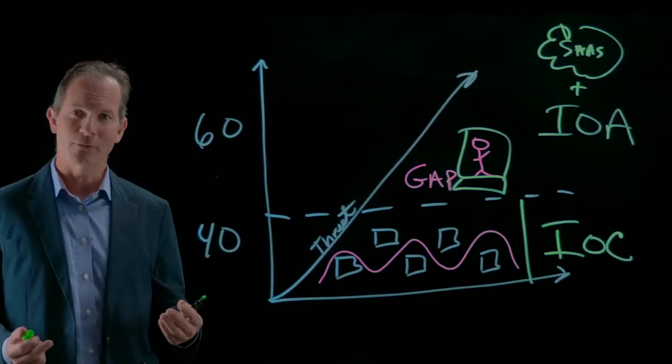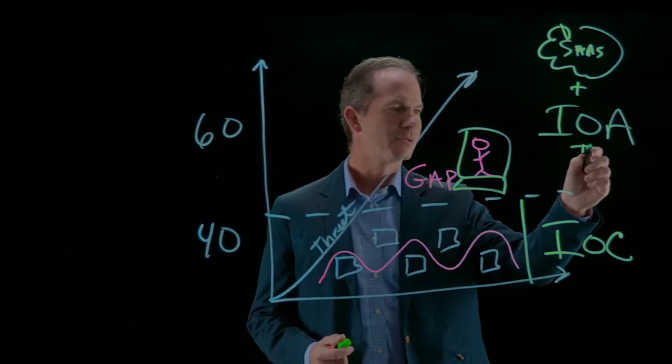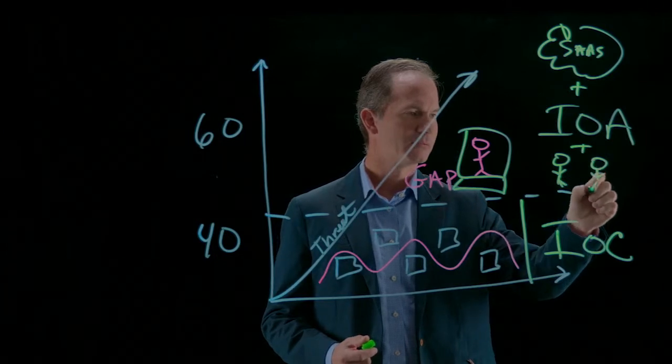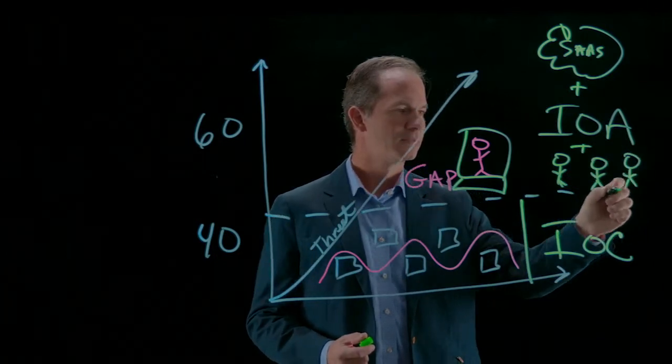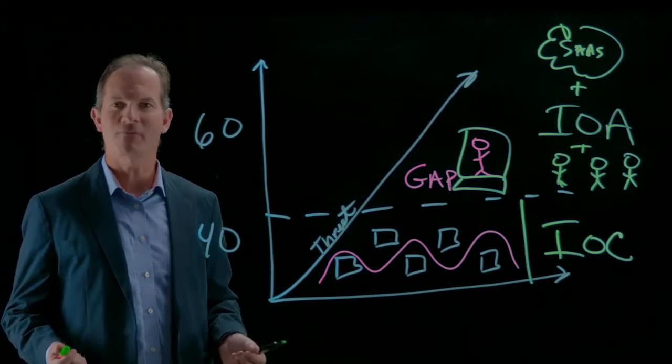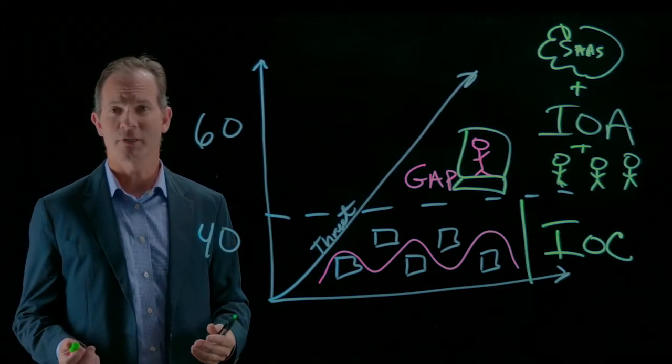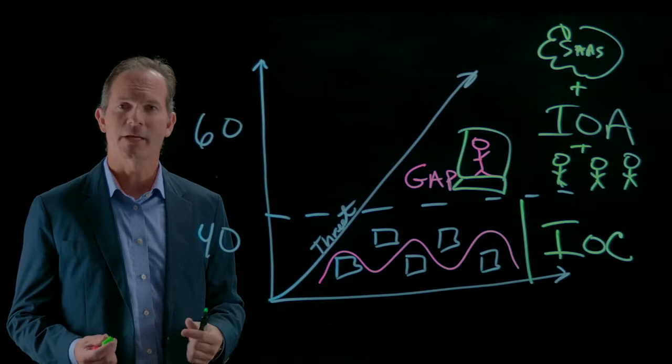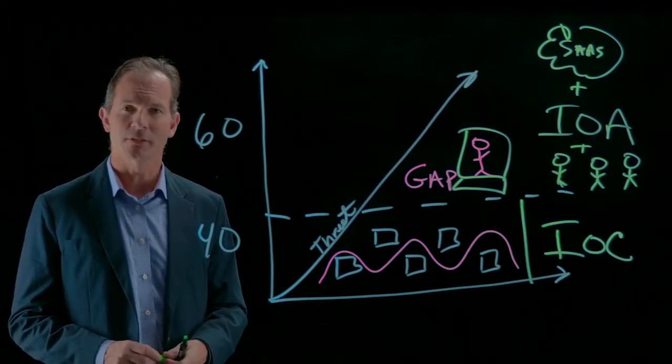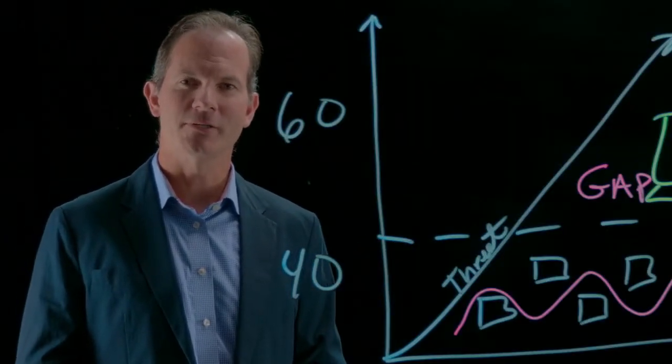So we have our cloud. We have our IOA capability. The third significant advantage and uniqueness of CrowdStrike is simply our people. There is a tremendous drought of qualified security professionals across the globe right now. Our customers feel it. Our partners feel it. CrowdStrike has been able to attract and retain some of the finest individuals in our industry. So let's start with the first group, CSOC, CrowdStrike Security Operations Center.